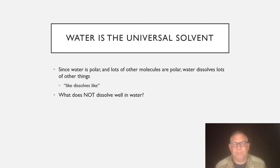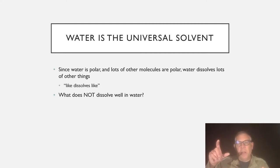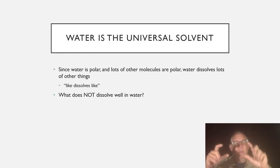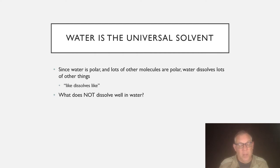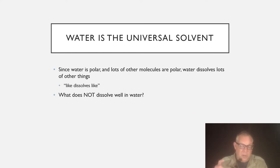Another property of water is that it's known as the universal solvent — it dissolves a lot of things. Water is polar, and lots of other molecules are also polar. The positive end of one interacts with the negative end of the other, so they interact very well. That's how things dissolve in water. There's a saying in chemistry: like dissolves like. Polar solvents dissolve polar molecules well, and non-polar solvents dissolve non-polar molecules well. What doesn't dissolve well in water? Oil — oil is not a polar molecule, so it doesn't interact with water molecules well.